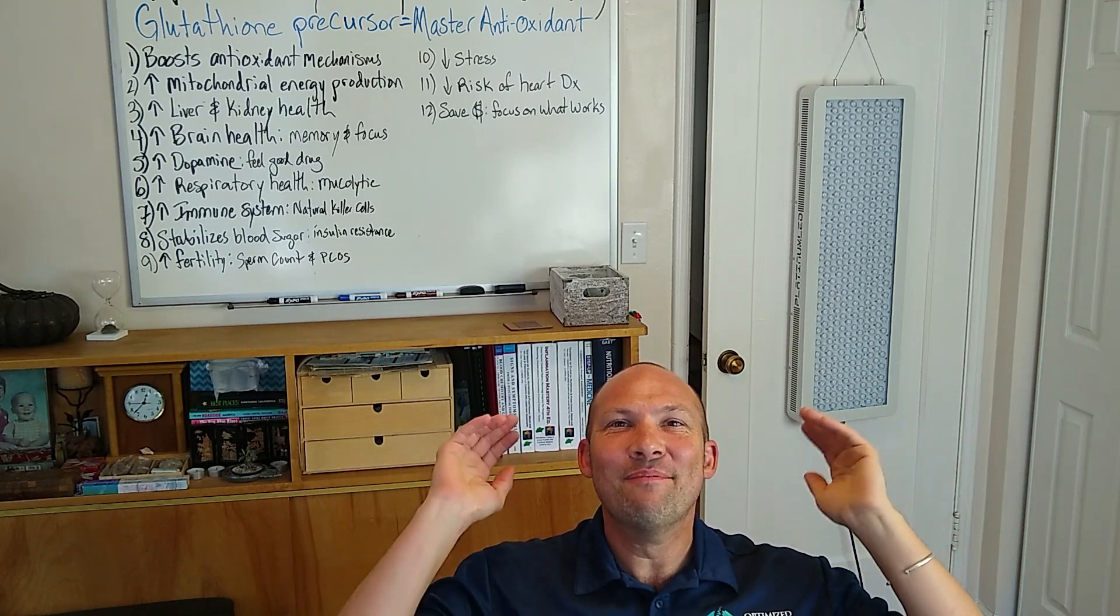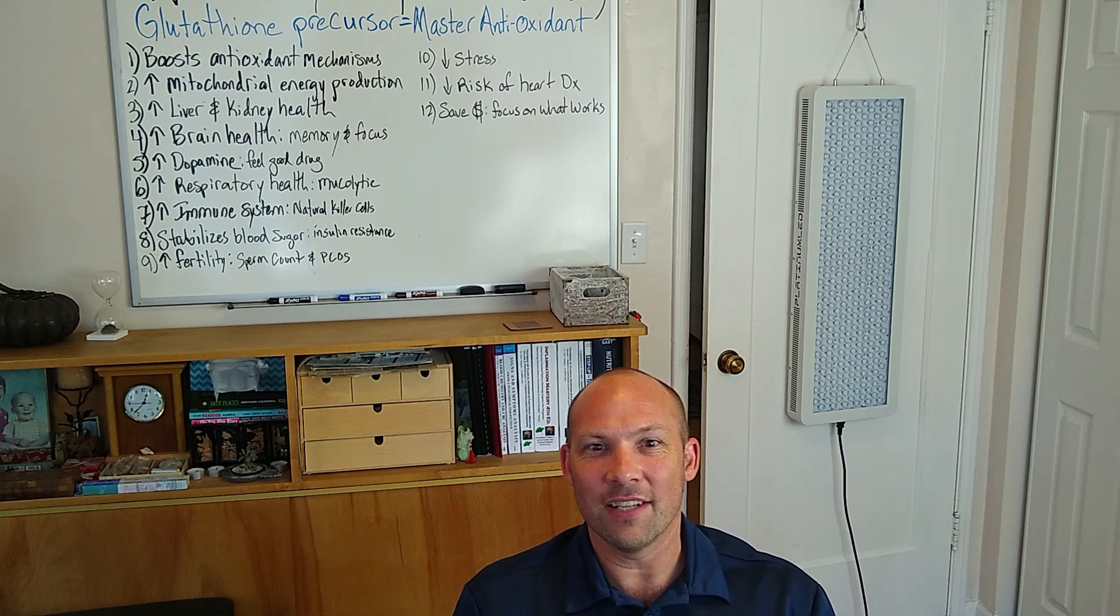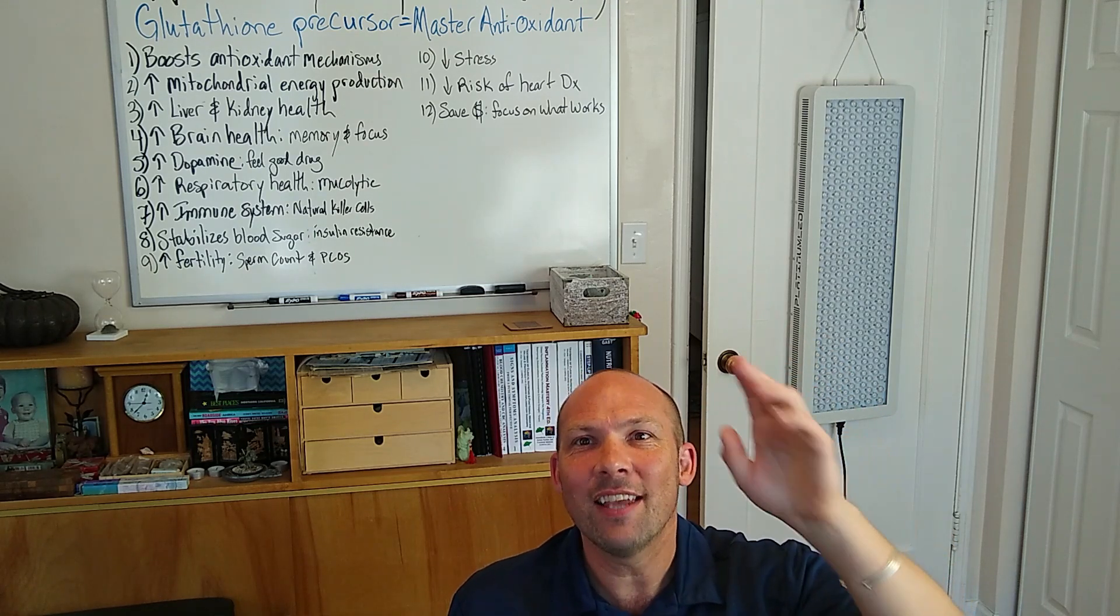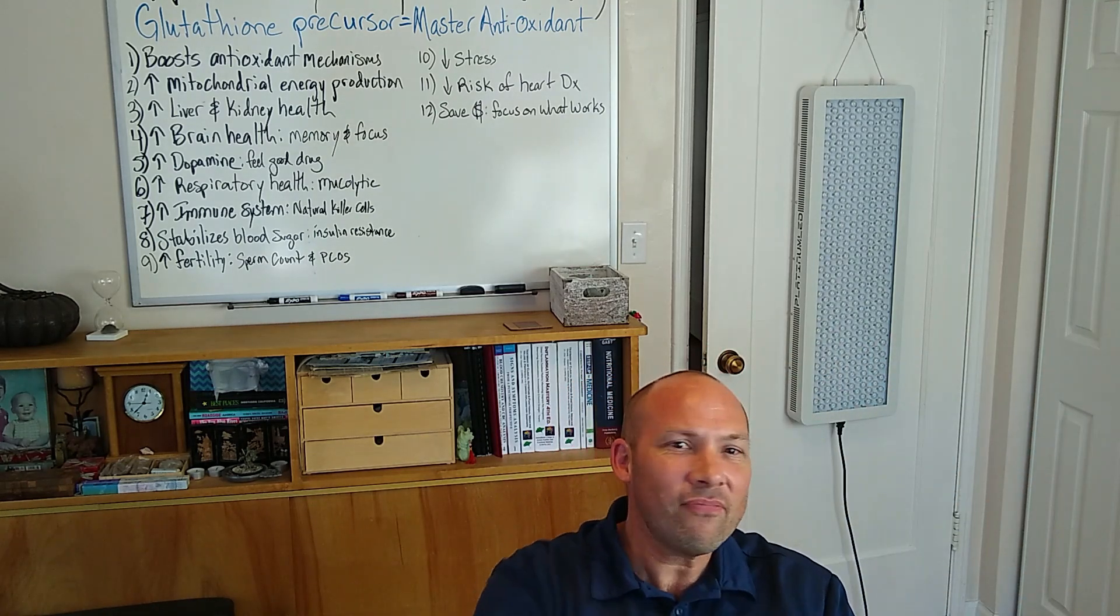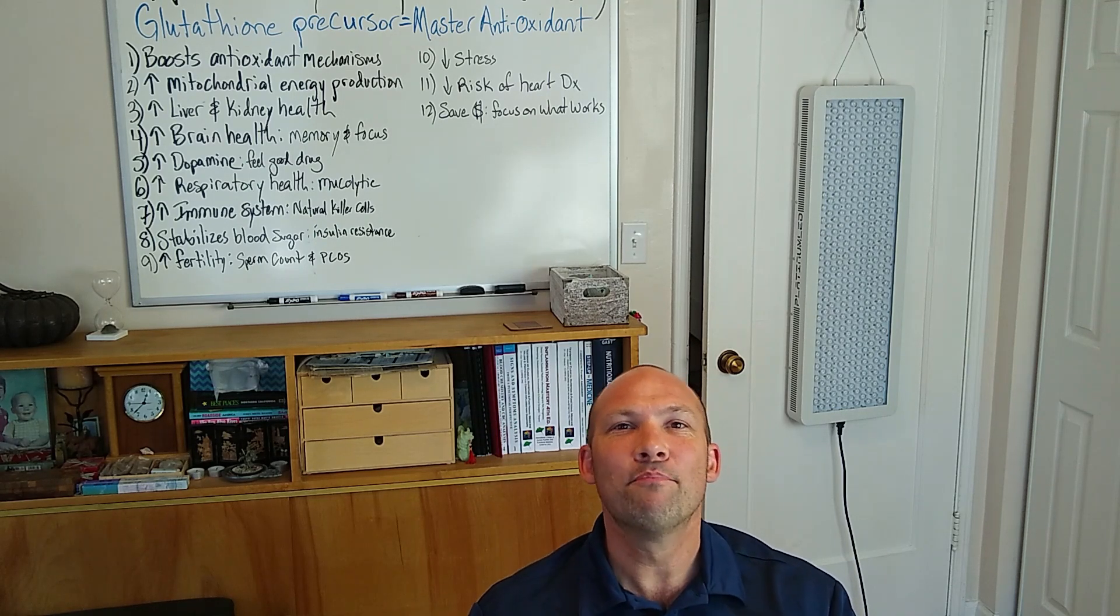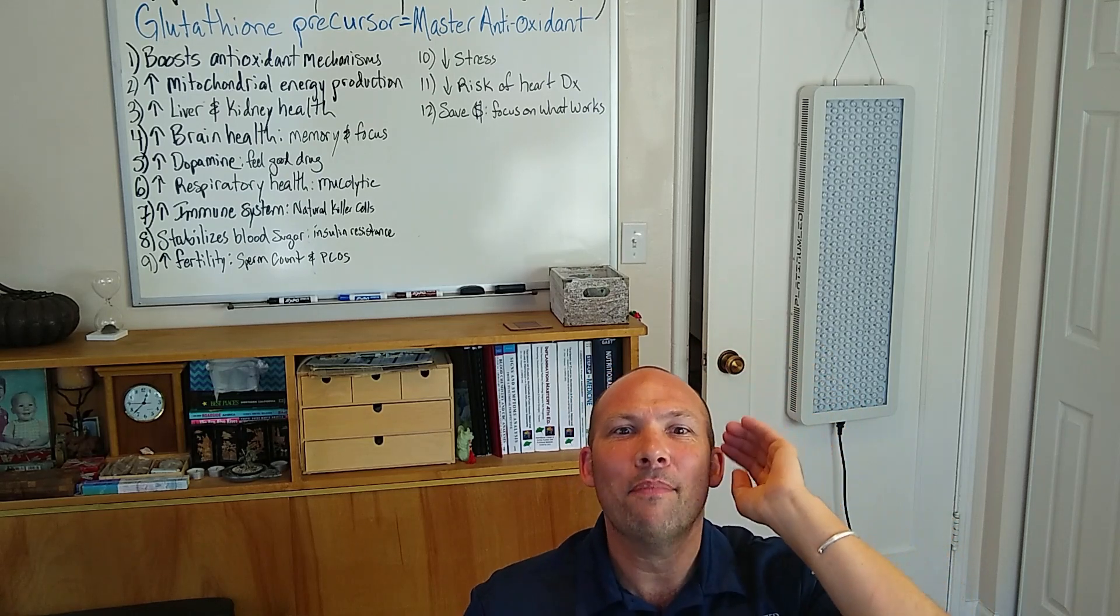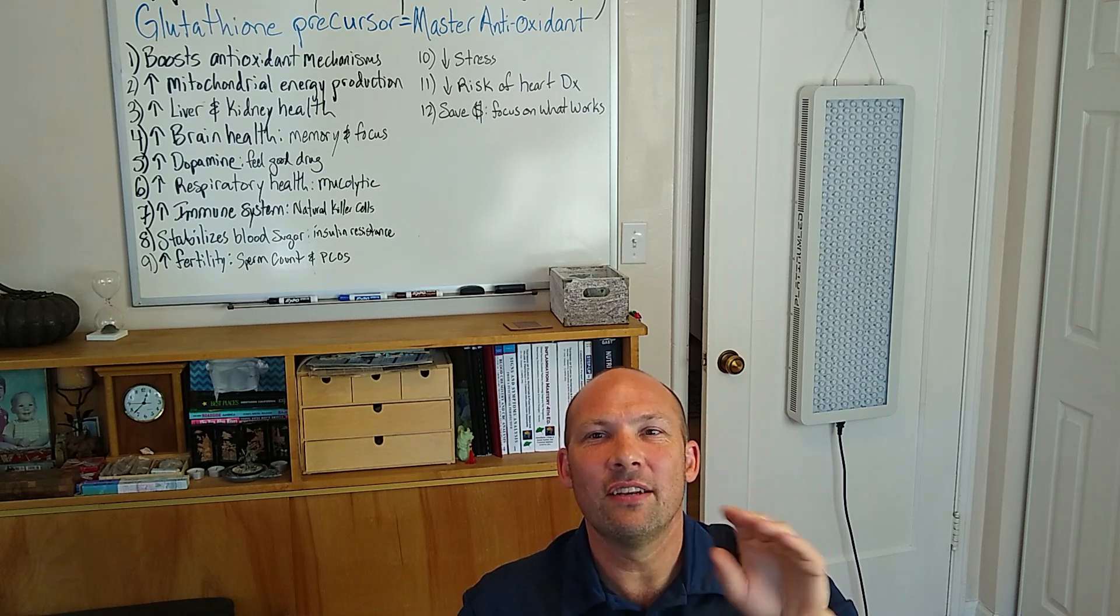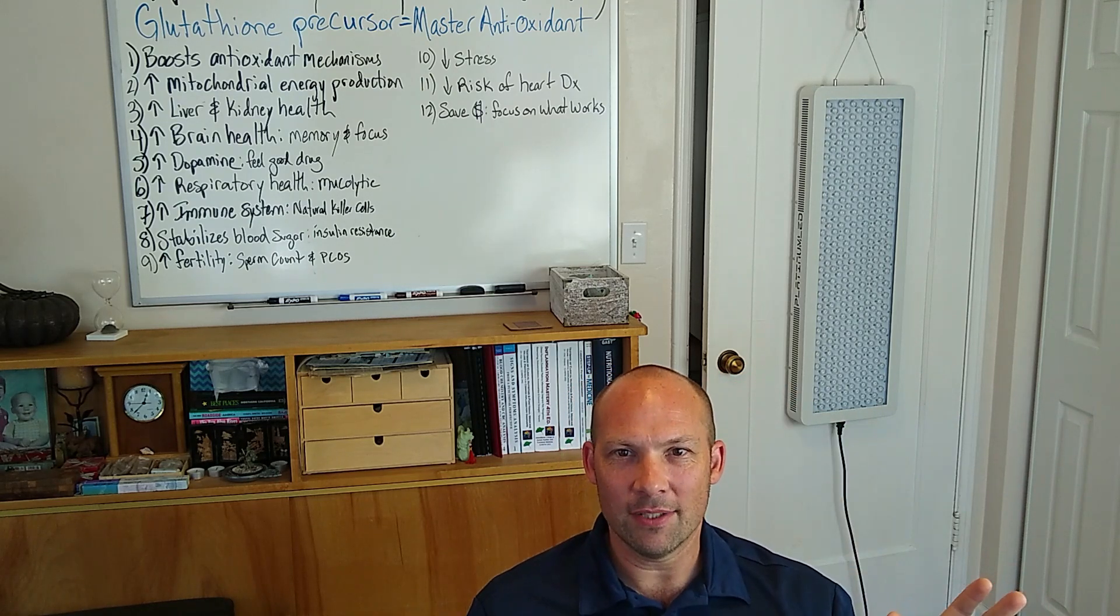Glutathione is the most critical of all naturally occurring antioxidants. Glutathione is the master antioxidant because it replenishes the actions of many other antioxidants. It increases mitochondrial energy production, improves your liver as well as your kidney health. By monitoring glutathione levels, we can measure an individual's risk for falling prey to environmental toxins.